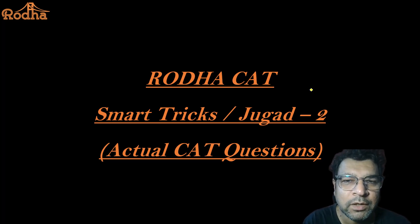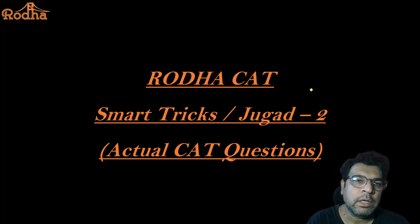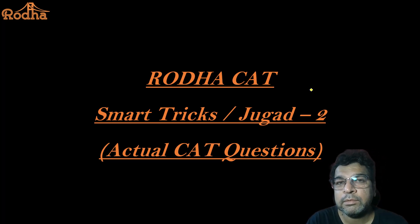Coming to the particular topic, it's actual CAT questions starting from last year and we'll go back to 2008, 2007, 2006 with actual CAT options. We will use smart tricks, jugaad is okay, but it's more about smart tricks and how we can save time while solving the particular question.